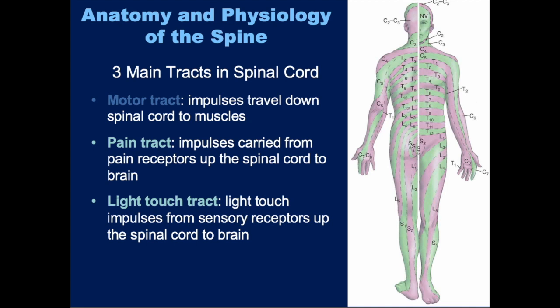All of these nerve impulses are in different places in the spinal cord, and you can individually injure any one of these tracts with the other ones still being intact.